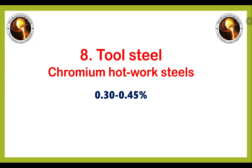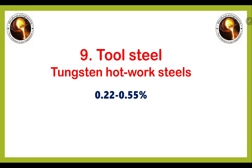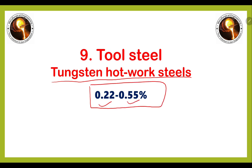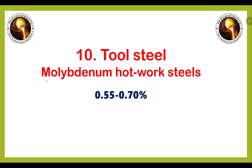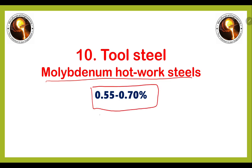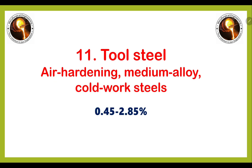The third type of tool steel is chromium hot work steel, in which the carbon percentage varies from 0.30 to 0.45. The fourth type of tool steel is tungsten hot work steel, in which the carbon percentage varies from 0.22 to 0.55 percent. Next is molybdenum hot work steel, in which the carbon percentage ranges from 0.55 to 0.70 percent.